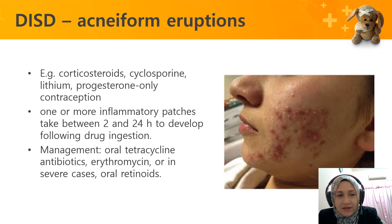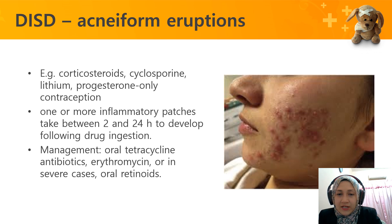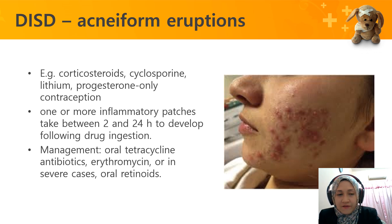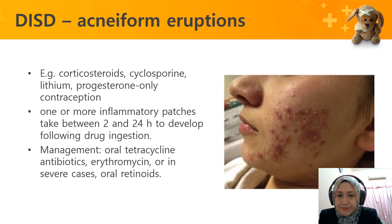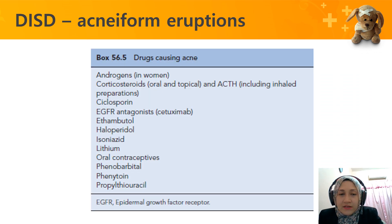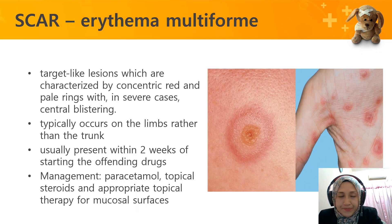The next type is acneiform eruption, which can be caused by corticosteroids, cyclosporine, or progesterone-only contraceptive pills. It presents as one or more inflammatory patches, also taking 2 to 24 hours to develop, mostly on the face. It can be managed with oral tetracycline antibiotics or azithromycin.